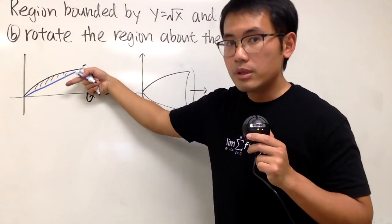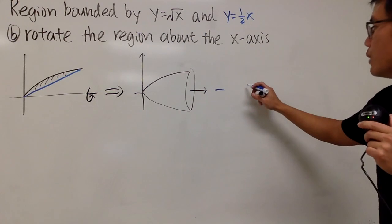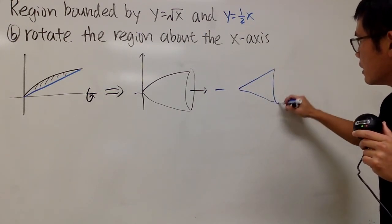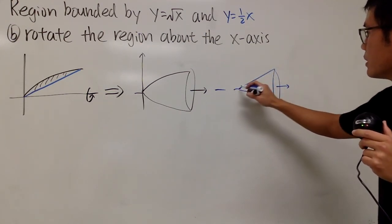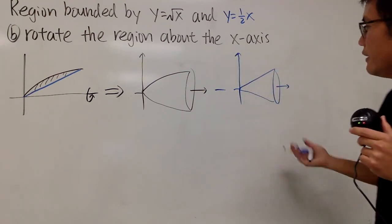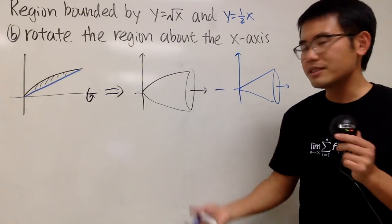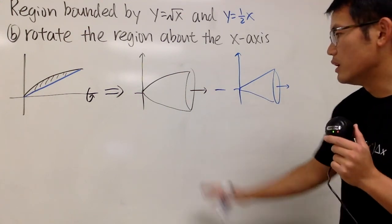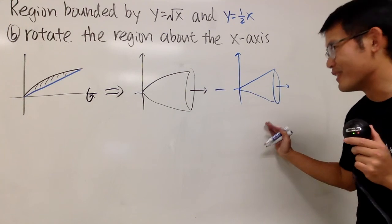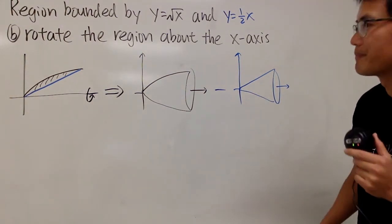Take this blue line, and then you rotate about the x-axis, you will actually get a cone, like this. So let's just go ahead and make a quick sketch. And in fact, people call this the washer method. It's actually just a disk method question right here, and then minus another disk method right here. So that's the picture that we will have.